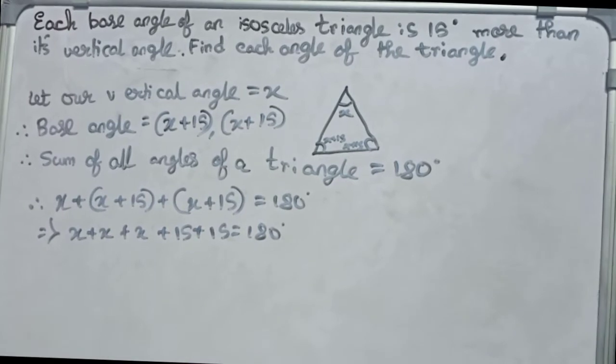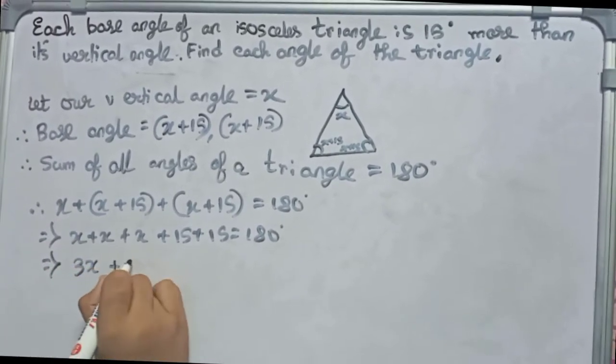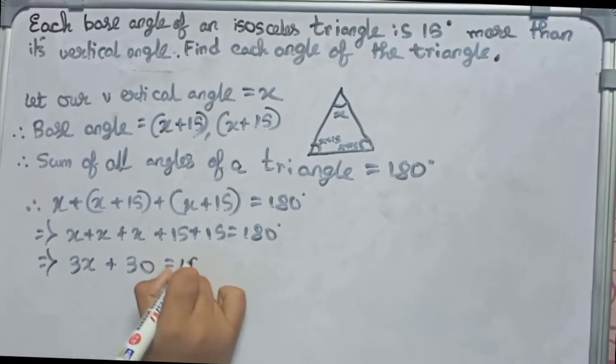Here just add the numbers and open the brackets. So it becomes 3x, that means 3x plus 30 equals to 180 degrees.